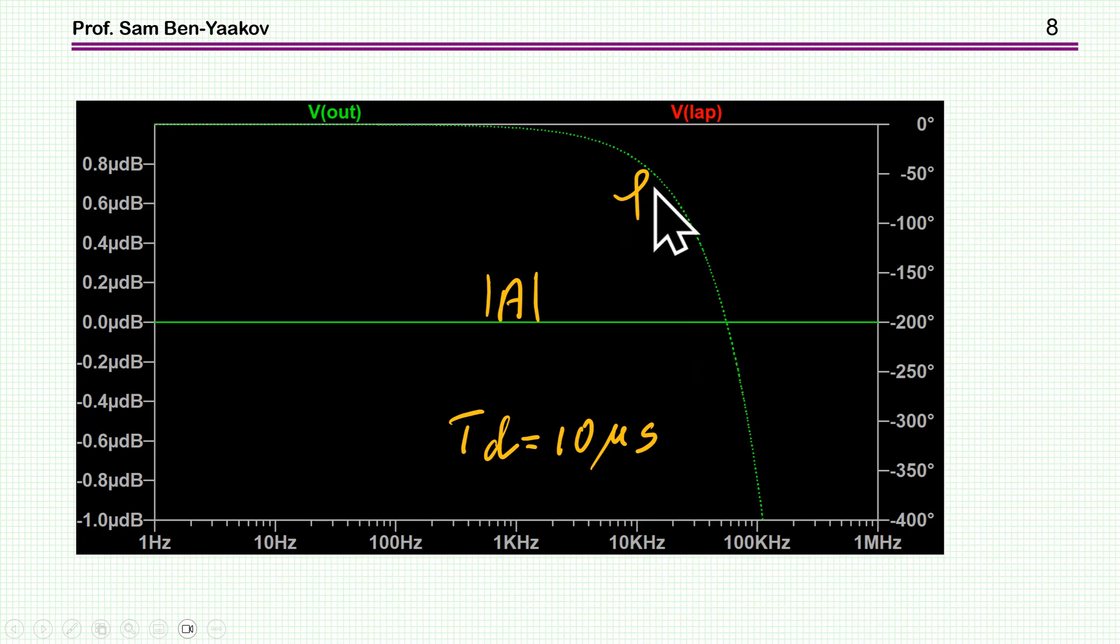So therefore, as you go up with the frequency, the phase lag is going down and down that it's becoming more and more negative, it's lagging. And as you can see, it goes very, very quickly to very large number. And this is because if you are at very high frequency, like 100 kilohertz, and your delay is 10 microseconds, it's like a full cycle, like 360.